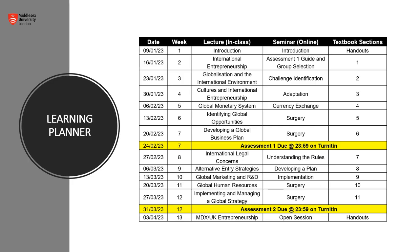This is your learning planner for the course. The learning planner is divided into 13 weeks with lectures and seminars. The lecture column identifies the topics we will be discussing in that class and also corresponds with the textbook sections on the far right. For example, international entrepreneurship is section one in your textbook. Seminars are used for discussing and elaborating further on questions that arise from each of the lectures and textbook sections.